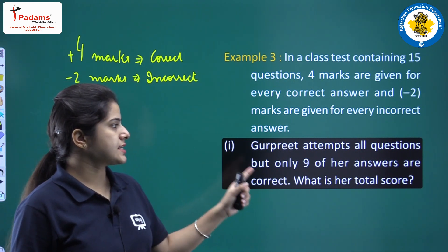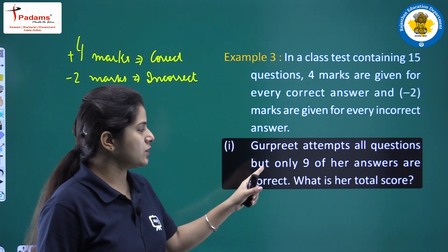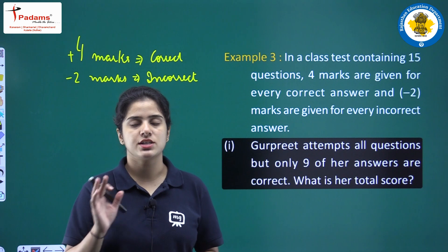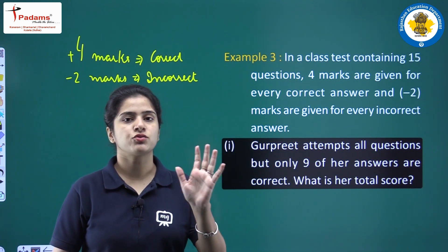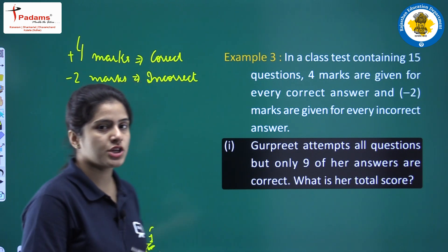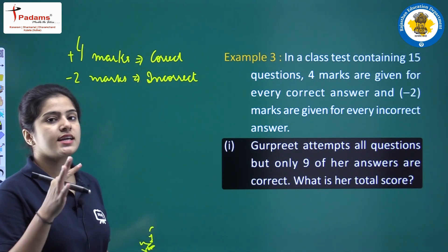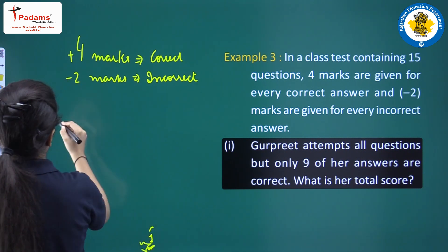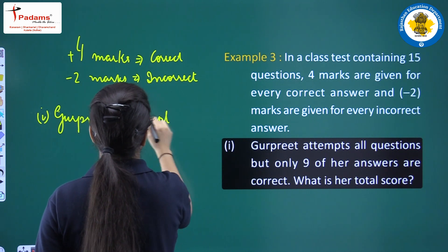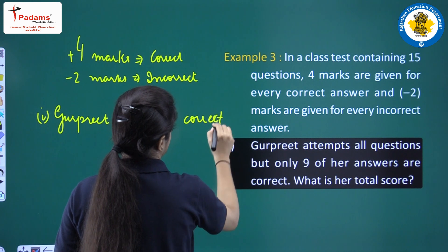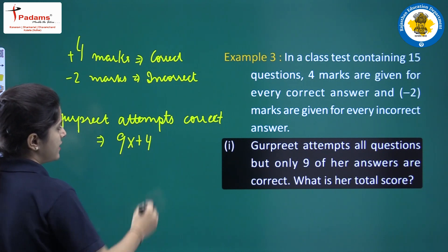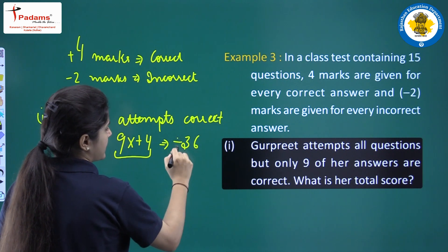First part: Gurpreet attempts all the questions but only 9 of her answers are correct. What is her final score? She is attempting 15 out of 15 questions and only 9 are correct, which means the incorrect answers are 6 — since 15 minus 9 equals 6. So she has 9 correct answers and 6 incorrect answers. For 9 correct answers, at plus 4 marks each: 9 into 4 equals positive 36.